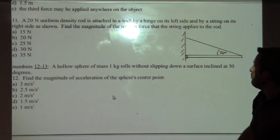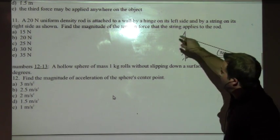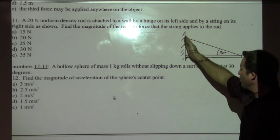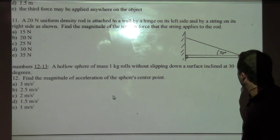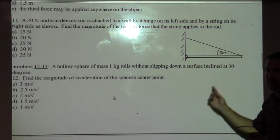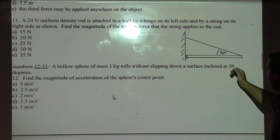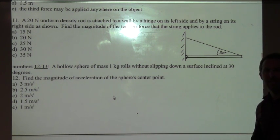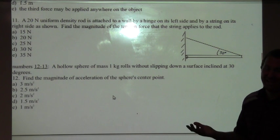So we've got one more equilibrium problem up here. We have this uniform density rod. It's attached to a wall by a hinge, and there's a string that connects to the wall and to the edge of the rod here at a 30 degree angle. We expect this rod to be in equilibrium. It's in static equilibrium.